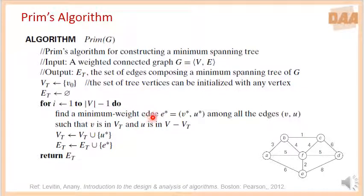At each iteration, find the minimum weight edge, say E star, which is connecting from V star to U star, among all the edges V, U such that V is in already seen vertices and U is in unseen vertices. So E star is an edge with minimum weight that connects from the seen vertices to the unseen vertices.